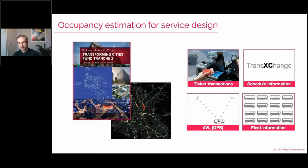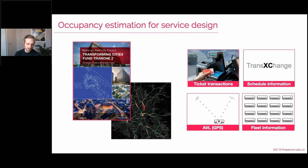Space Checker built on technology and processes we'd already been using in the bus industry and with local authorities to help better design services and identify the most appropriate locations for interventions such as bus priority. We were tackling the problem that it was difficult to identify how many people were on a bus at each time — only bus boardings were tracked, not when people were getting off. So we developed a process that estimates where people were getting off, enabling us to identify how busy the bus was along the whole route.